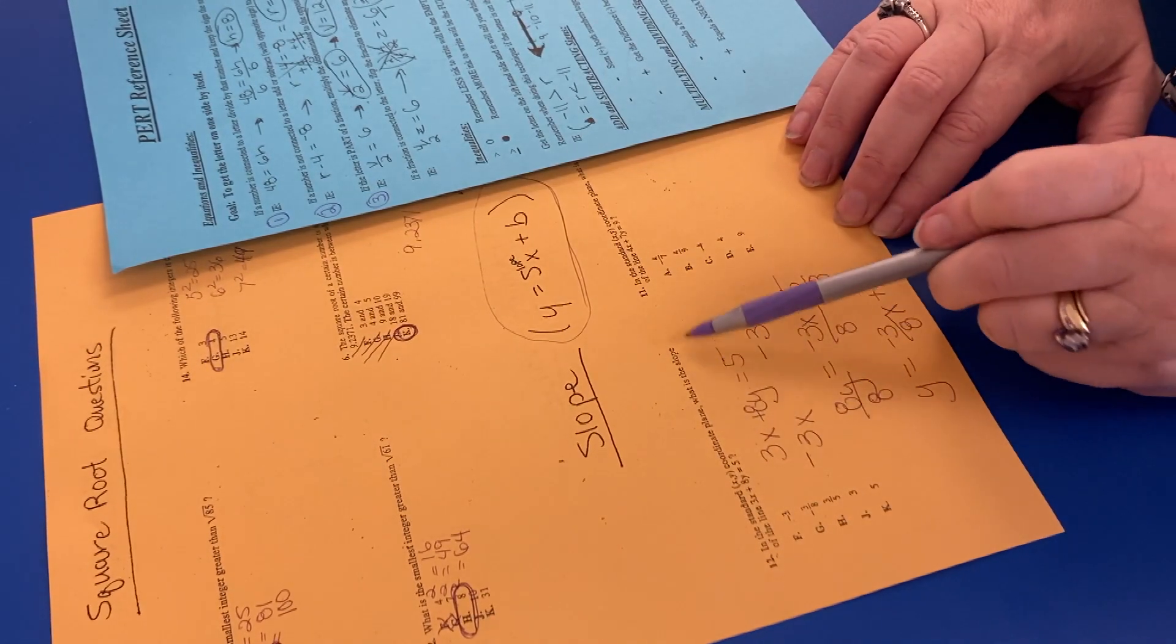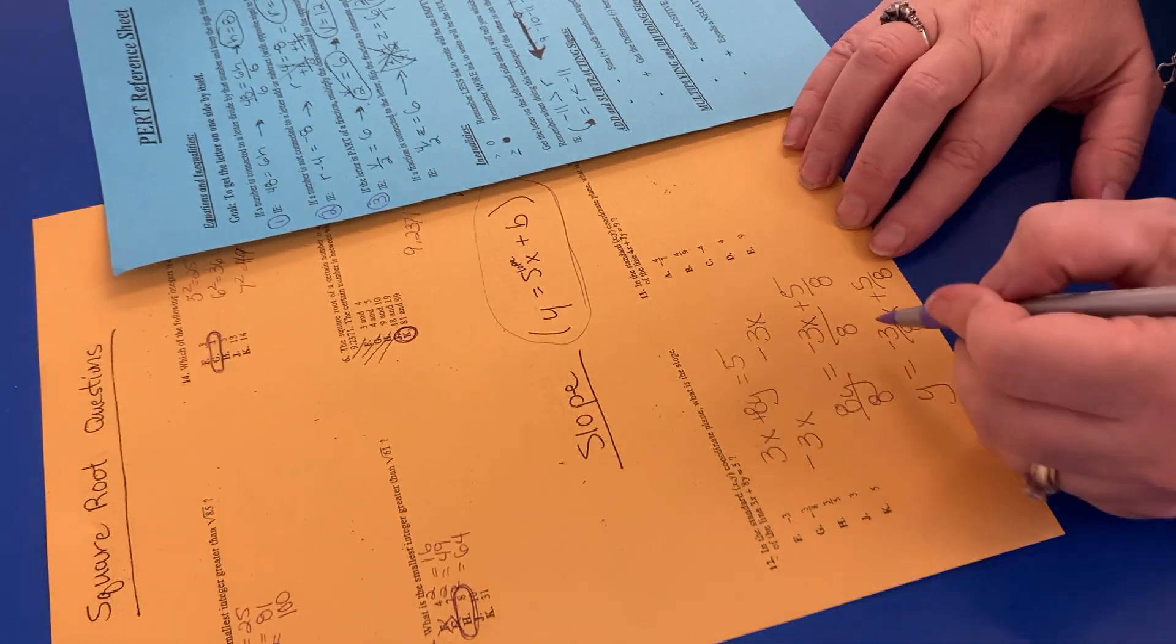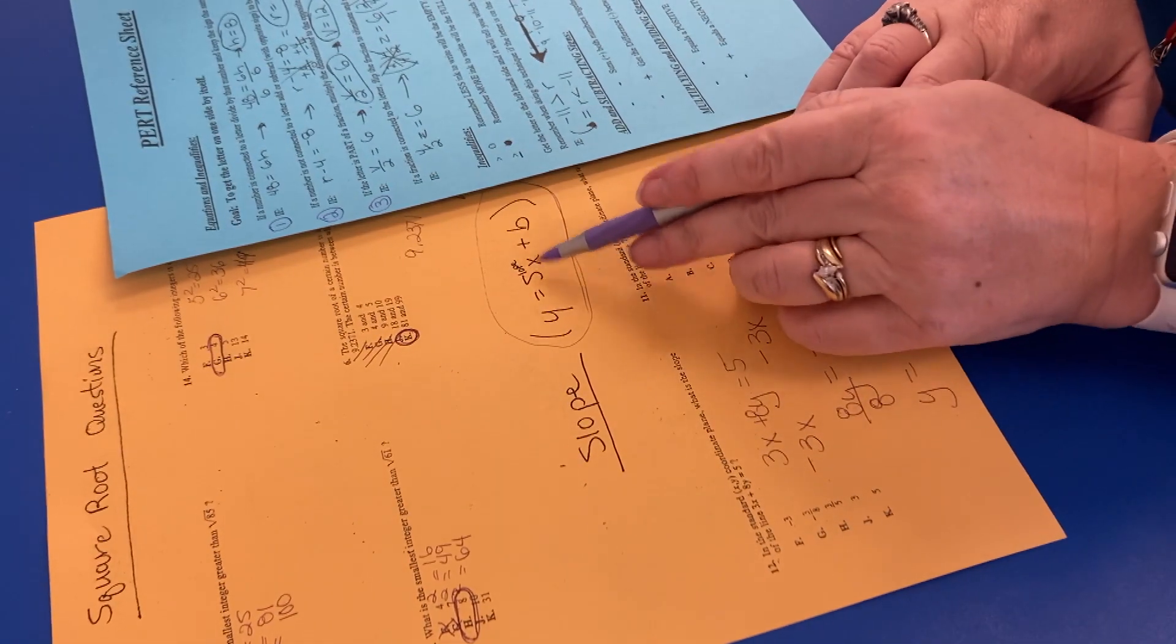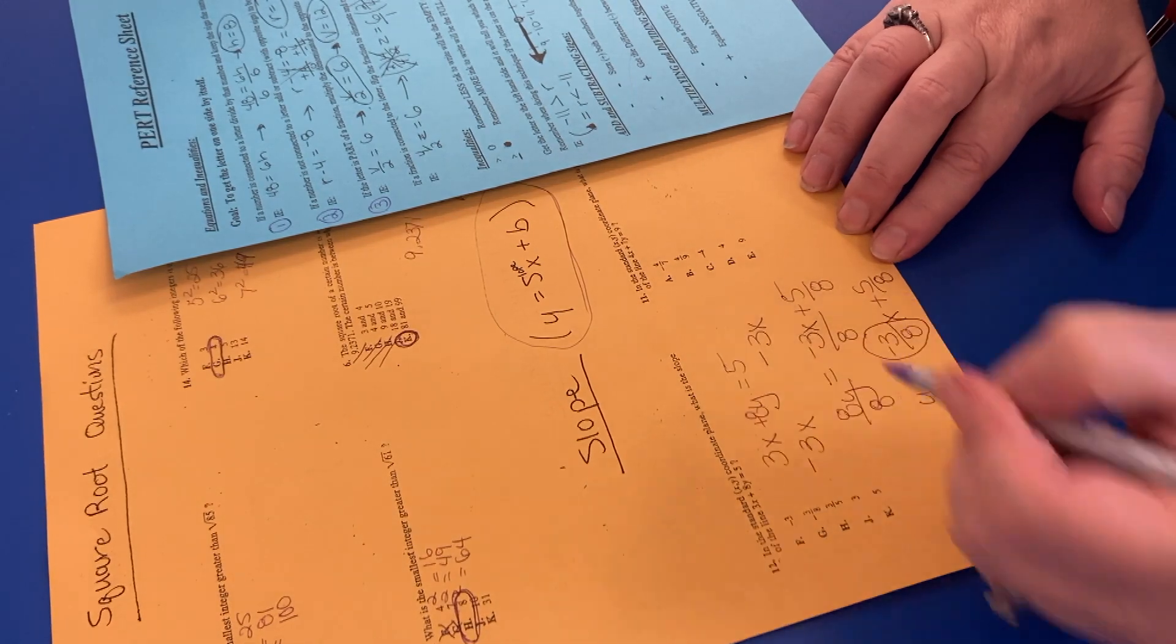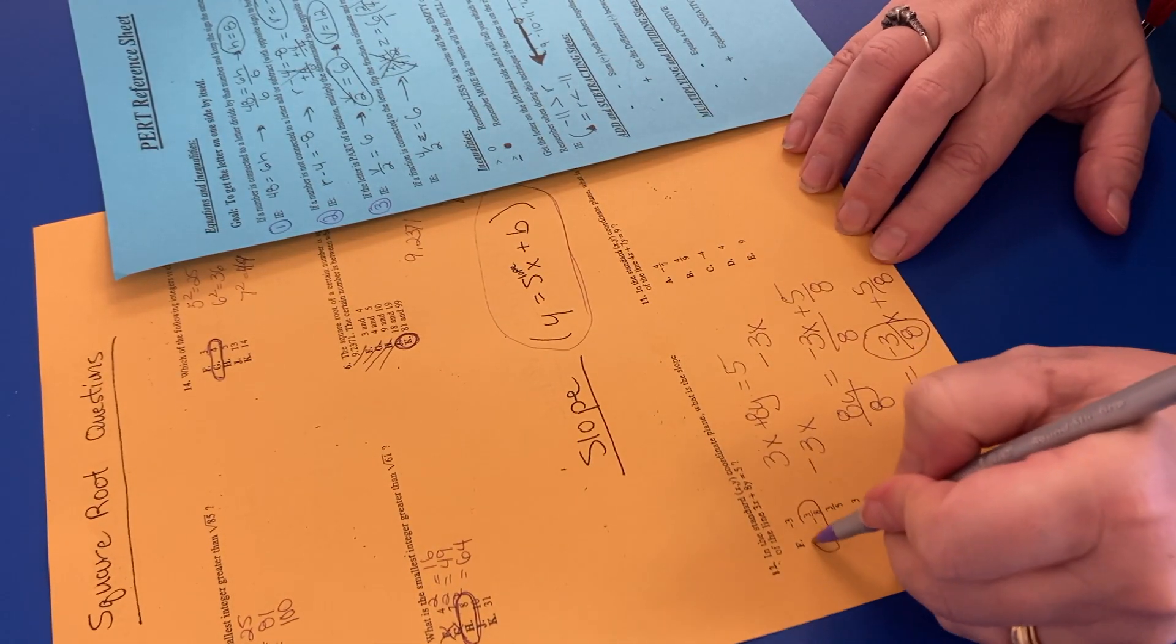So it says, what is the slope of the line? Okay, so what is the slope? Remember, the slope is always connected to the X, so it's going to be the negative 3 over 8. So that would be G.